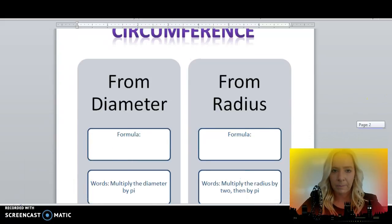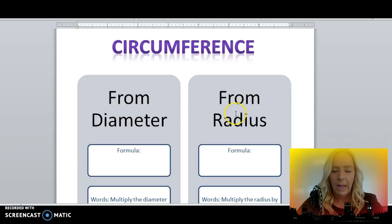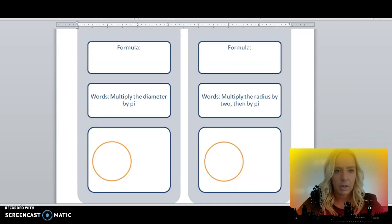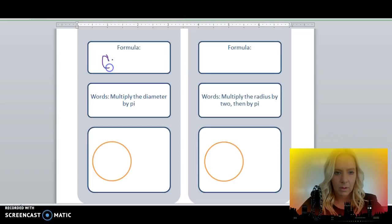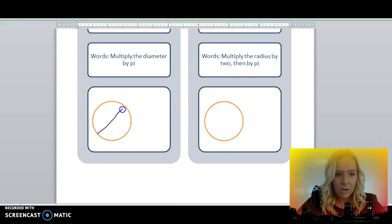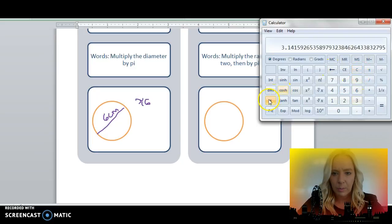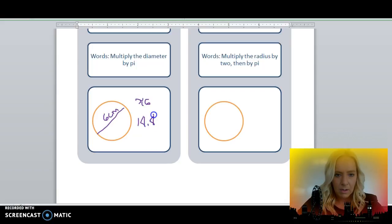What I want you to do is visit your graphic organizer. We're going to calculate circumference from diameter and from radius. If you're given a diameter, circumference is equal to pi times the diameter. C equals pi times d. Multiply the diameter by pi. Let's create a diameter of 6 centimeters. Let's multiply pi times 6. Pi times 6 is about 18.8 centimeters.